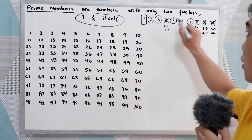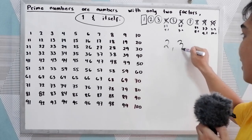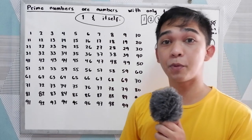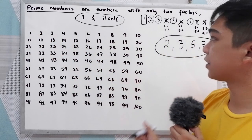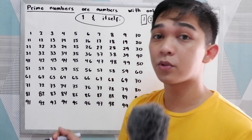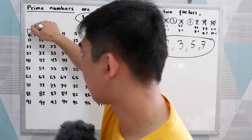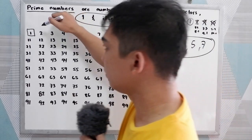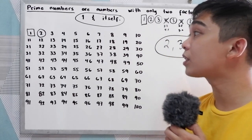Now, let us use our prime factors between one to ten — we have two, three, five, and seven — to determine the prime numbers between one to one hundred. I've listed the numbers from one to one hundred here. Since number one is not a prime or composite number, we're going to box number one. Next, circle two, then cross all the multiples of two.